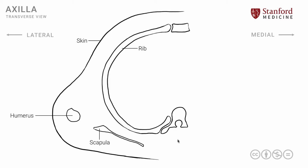The first muscle with an important relationship to the axilla is the large pectoralis major muscle. This muscle has its attachment more medially onto the rib cage and adjacent areas, and the fibers traverse laterally to attach onto the anterior part of the humerus. This pectoralis major muscle forms the anterior boundary of the axilla.